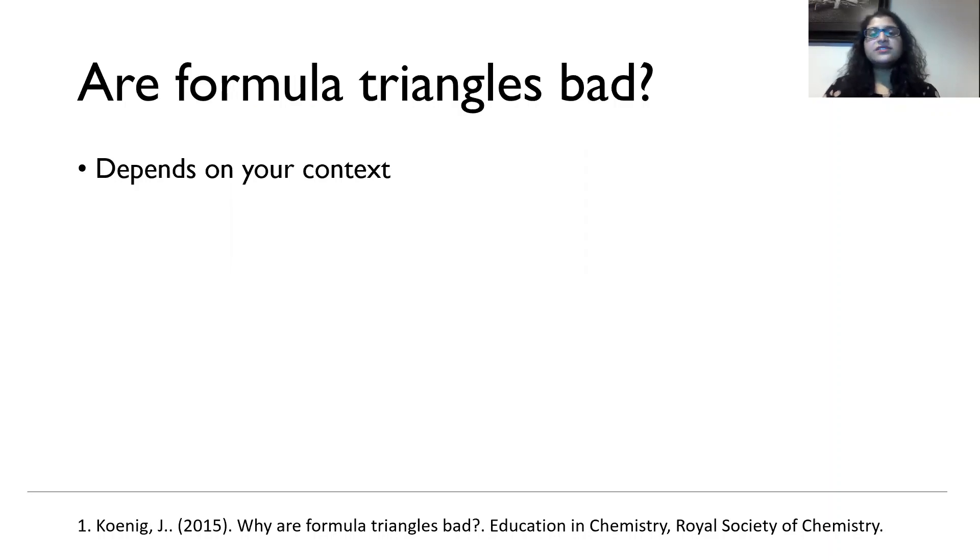If you've got a class in front of you that have low working memory, they struggle to retain facts, they can't rearrange equations in maths either. If that's the case, then a formula triangle is probably going to be useful, helpful. But if you have classes like I've got, quite a few bottom set classes who are weak in science, yes, definitely, but I know that they can actually rearrange equations if pushed. And I know that they can do it in science too if they can do it in maths. So it does depend on which class you are looking at and what you think about what they're capable of.